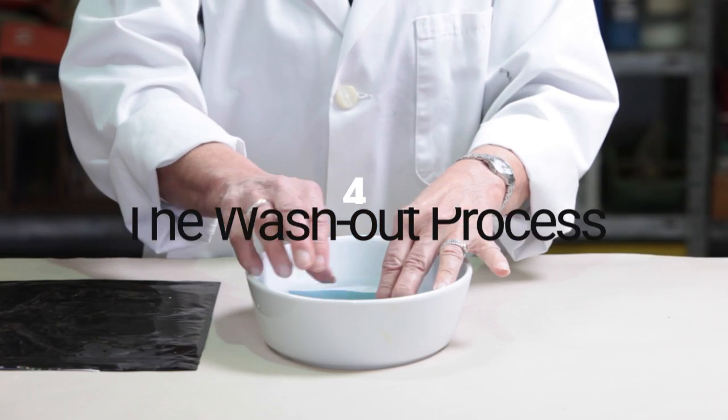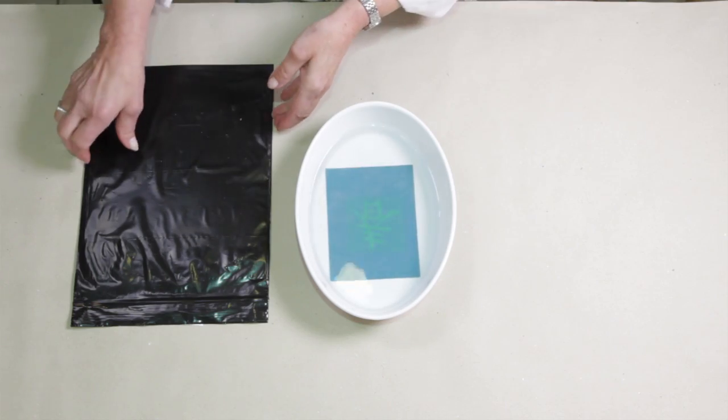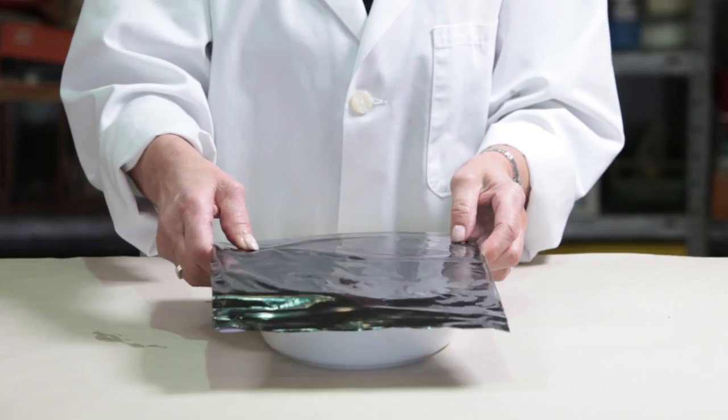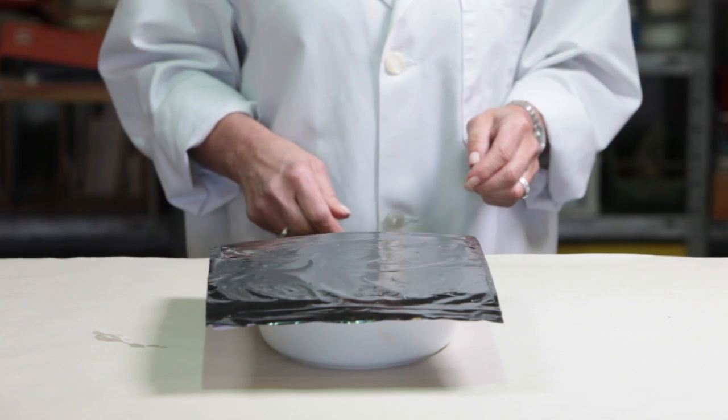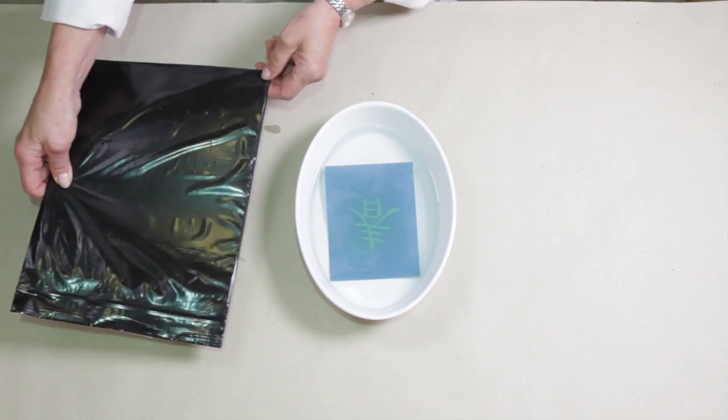Place the exposed screen in a bowl of lukewarm water and soak it for a few minutes. The bowl should be covered so that the still photosensitive screen is protected from the light. After a few minutes the image will start to become clearly visible.